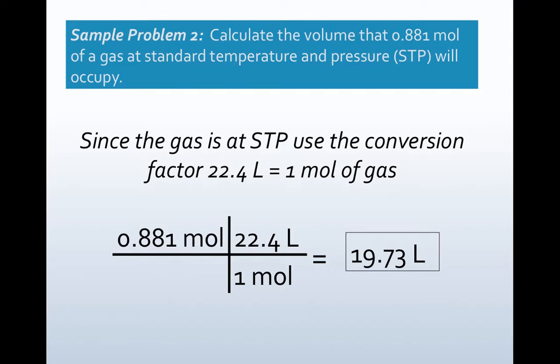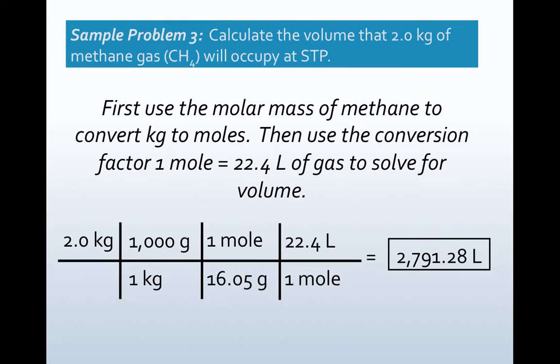Another sample problem: calculate the volume that 0.881 moles of a gas at STP will occupy. The key to this problem is STP, Standard Temperature and Pressure. When you see that, you can simply just do a conversion using the 1 mole equals 22.4 liters idea. So I start with what I'm given, 0.881 moles. Notice it doesn't matter what the gas is. Do my molar conversion, and I get 19.73 liters. You can only do this at STP. If your temperature and pressure is anything other than 1 atmosphere and 0 degrees Celsius, this will not hold true.